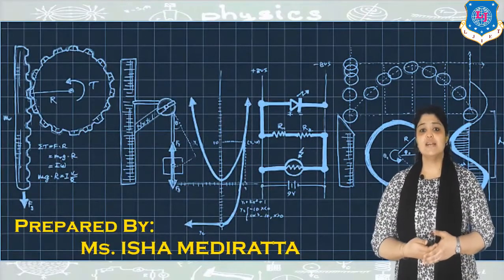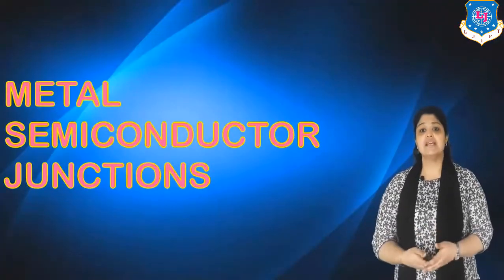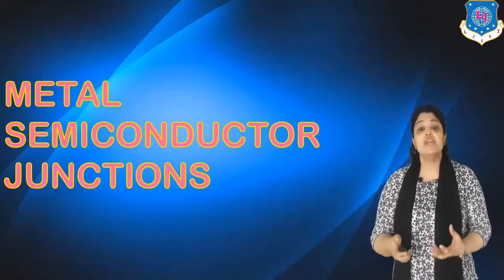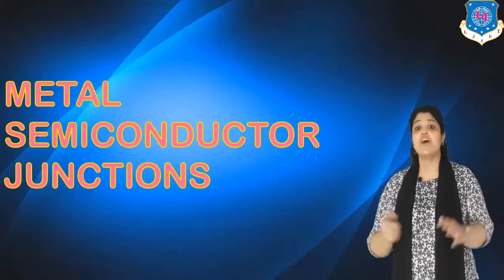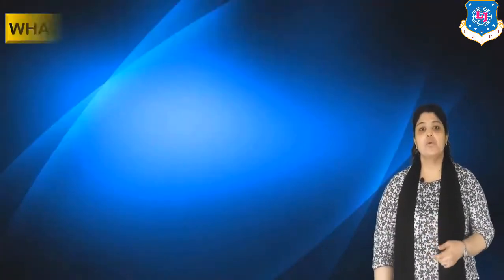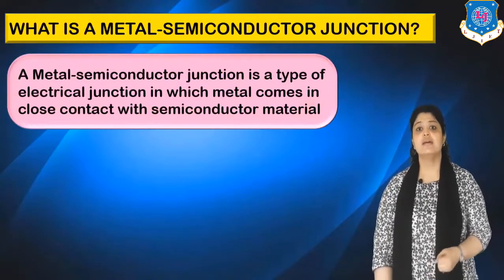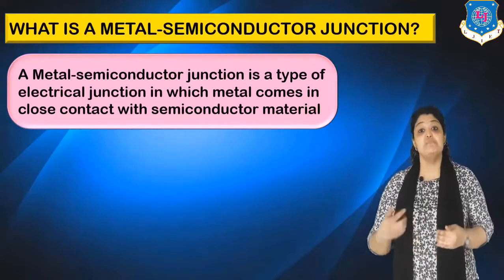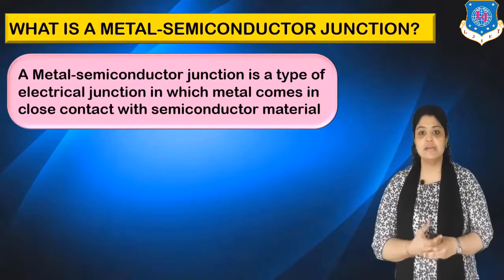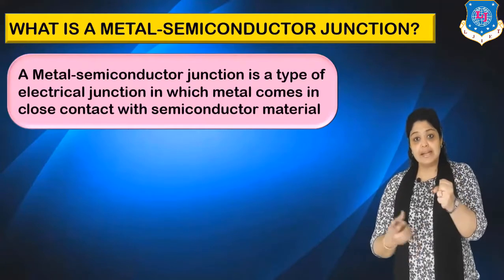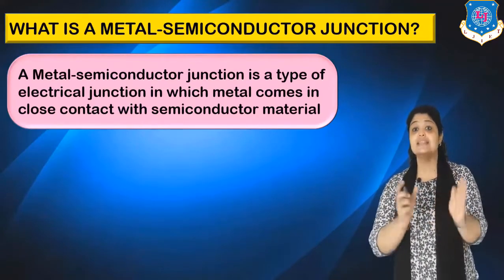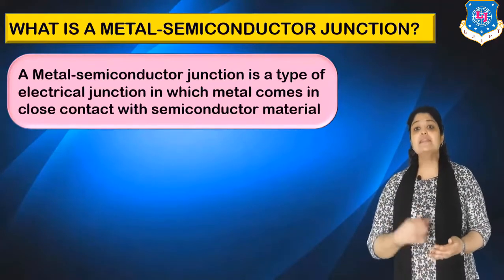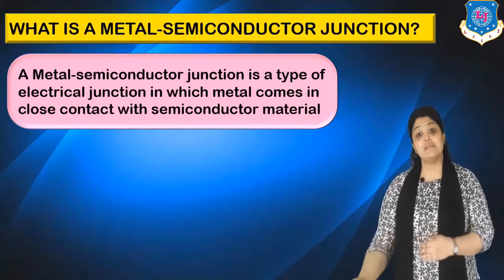Hello students, I am Isha Mederita. Today I am discussing metal semiconductor junctions. This particular junction is made using a metal and a semiconductor, so it's a combination of both. A metal semiconductor junction is a type of electrical junction in which metal comes in close contact with semiconductor material, forming what is also commonly known as an MS junction.